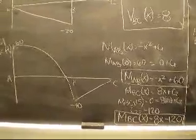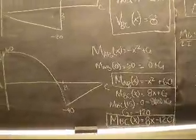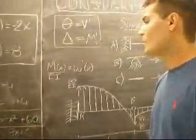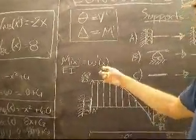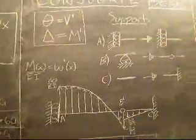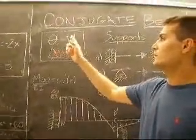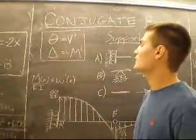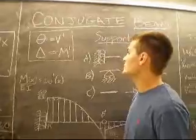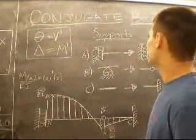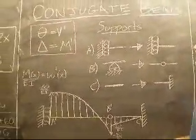Now that we have the moment equations from A to B and B to C, we put them into our conjugate beam, where the moment equation of the real beam over EI equals the loading of the conjugate beam. The slope of the real beam equals the shear of the conjugate beam, and the deflection of the real beam equals the moment of the conjugate beam. We have to change our supports to draw the conjugate beam.